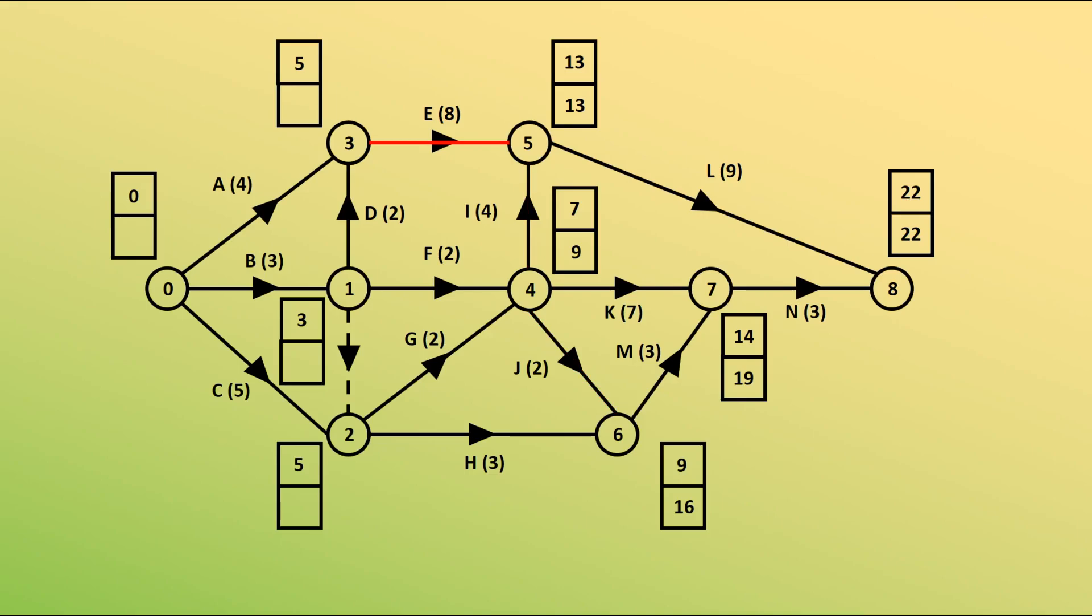Node 3 has just 1 coming out of it. We need to get to node 5 at 13, so 13 minus 8 is simply 5. Node 2 has 2 coming out of it, g and h. Looking at the late event time for node 4, 9 take away the duration of g, which is 2, giving us 7. And looking at h, we've got 16, which is the late event time for node 6. 16 take away 3 is 13. We want the smallest value. Node 1 has 3 coming out of it. 5 take away 2 for d, giving us 3. 9 take away 2 is 7 for f. And 7 take away 0 for the dummy, which is going to give us 7. We want the lower one.